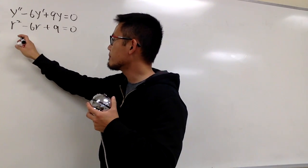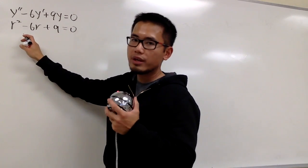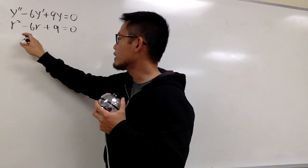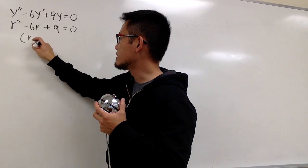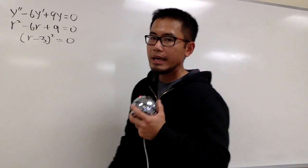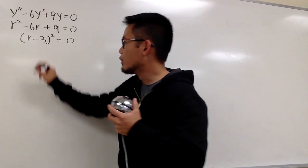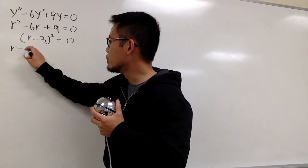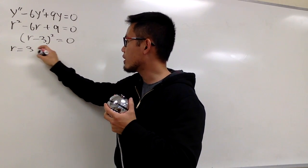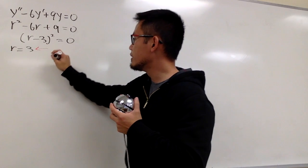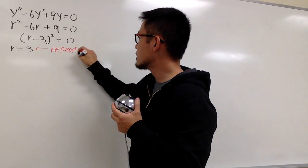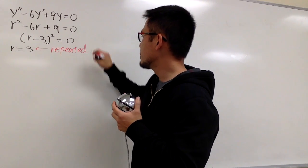We can factor this. Once you factor this out, you'll get r minus 3 times r minus 3. In other words, we can write this as r minus 3 squared equal to 0. In this case, we will only have one r value, which is plus 3. This is the repeated root.